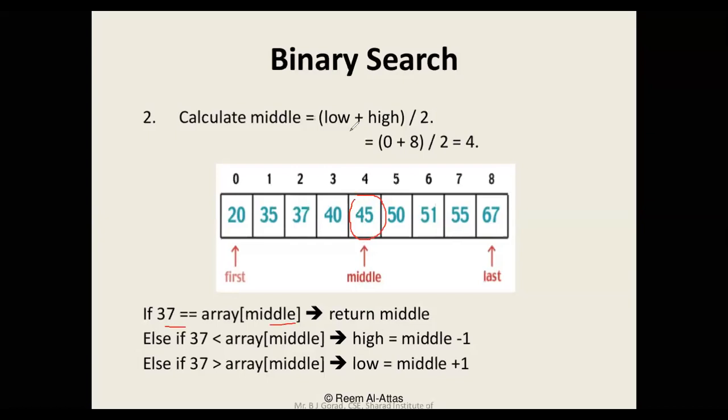In the first iteration we compared 45 with 37, that is array middle. Array middle is 45 because low plus high divided by 2 equals 4, and at index 4 is 45. Since 37 is less than array middle, the value of high which was 8 is updated to middle minus 1, which is 3.